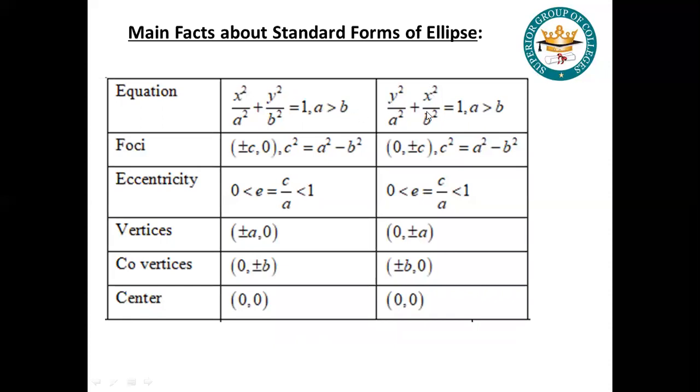The other equation: y² / a² + x² / b² = 1. Now the value of a is greater than b, so the major axis will be on y. What is the focus of this equation? (±c, 0) and c² = a² - b². This is the formula. For the other, (0, ±c). This is for the y-axis and this is for the x-axis. c² = a² - b².